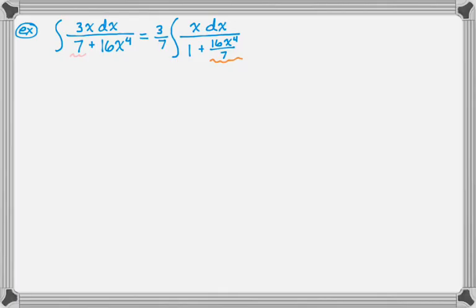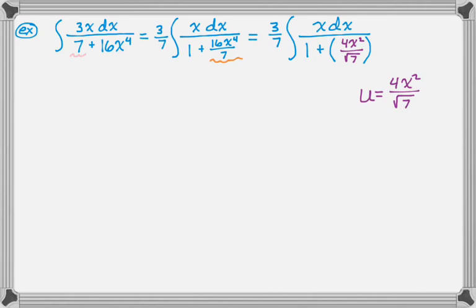So u is just kind of ugly here. It's going to be 4x squared over radical 7. It doesn't really matter. So let's rewrite it, because it doesn't change the process. It's just kind of uglier. So the quantity, 4x squared over radical 7, and then that's supposed to be squared. But I didn't write it, so there you go. So u is 4x squared over radical 7. du is 8x, so it's like 4 times 2x is 8x over radical 7 dx. So then radical 7 over 8 du is x dx. And I can make all my substitutions.